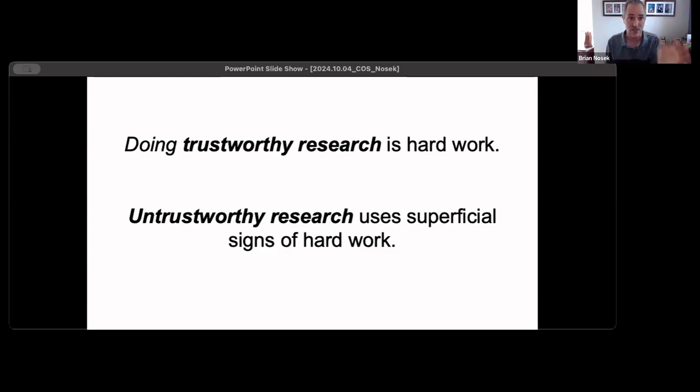A challenge, given the current reward system in the research culture, is that untrustworthy research, even deliberately untrustworthy research, uses superficial signals of hard work but skips the steps, and still tries to gain credibility in the marketplace of ideas by providing just the simple heuristic signals, rather than revealing all of that work behind the scenes. They can't reveal it. The untrustworthy process didn't do those things. It's the trustworthy researchers that have all of that support that's invisible behind the scenes of the work they did to get to those findings.